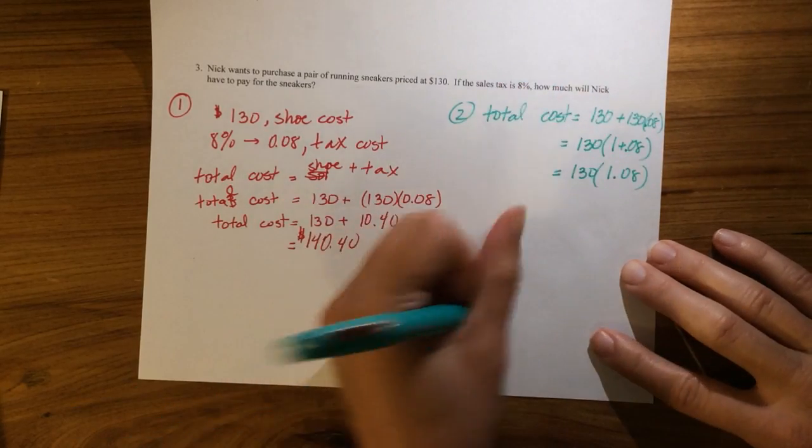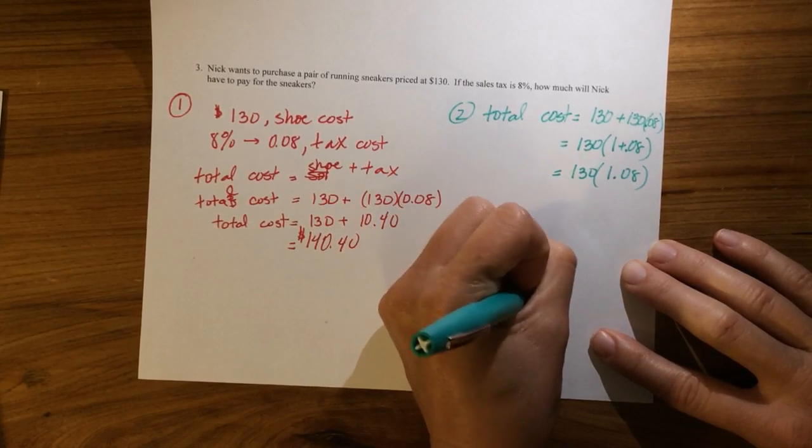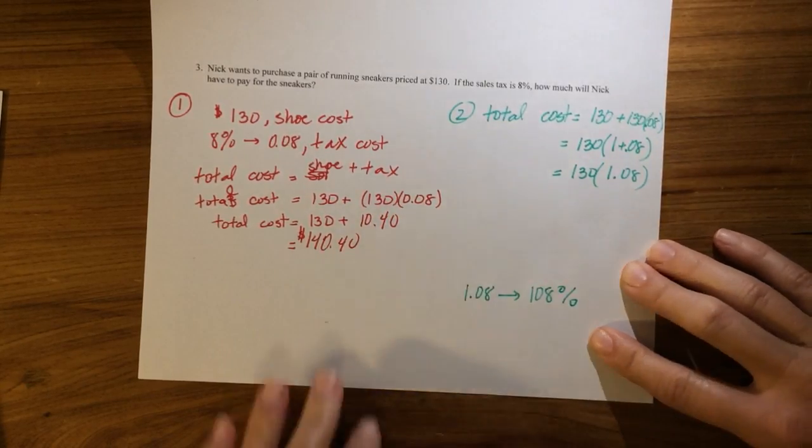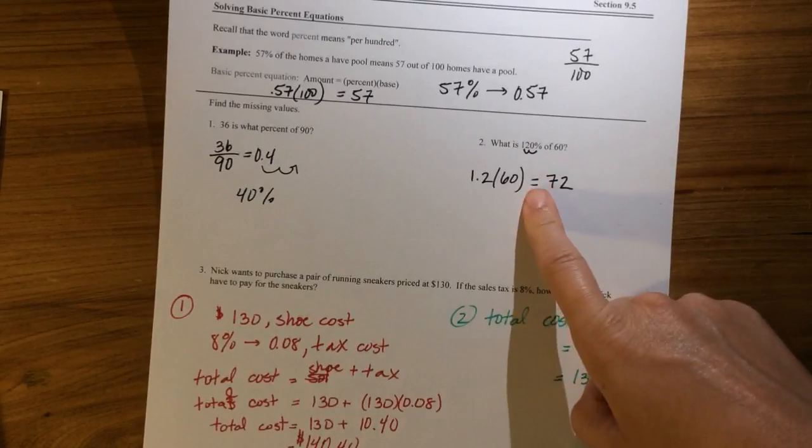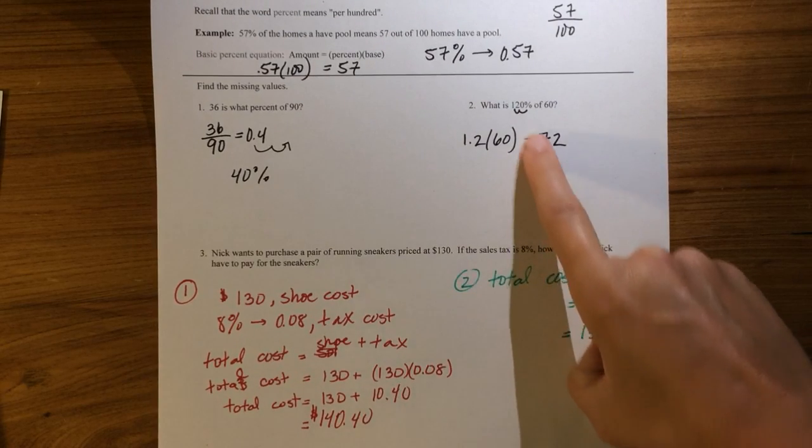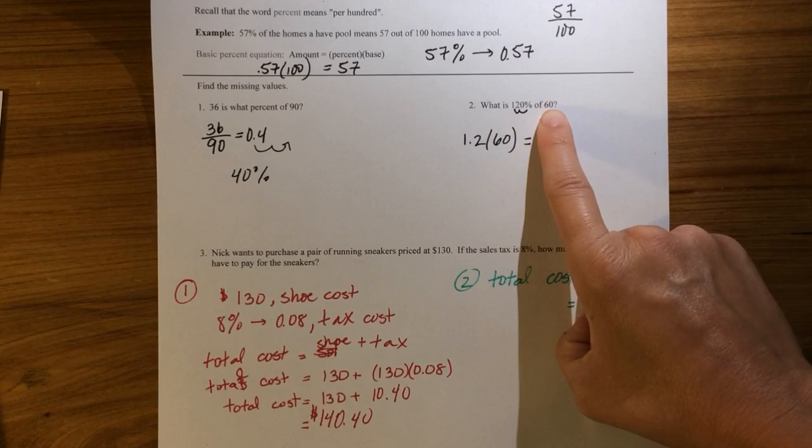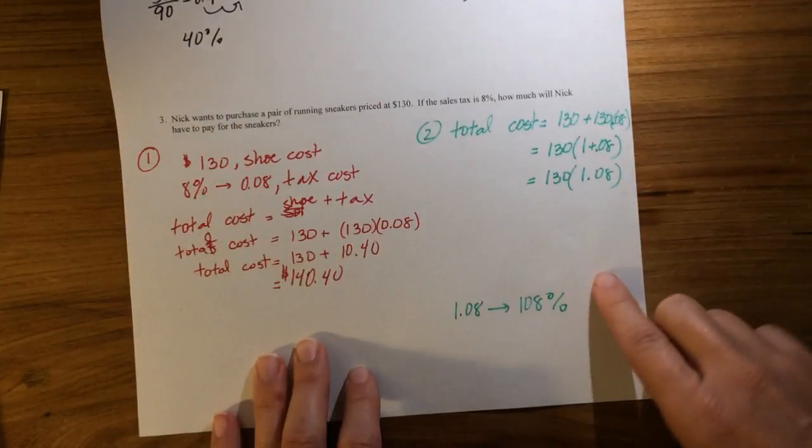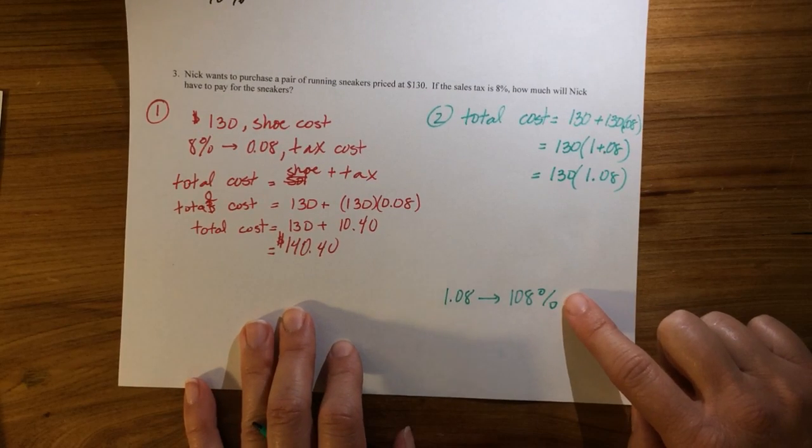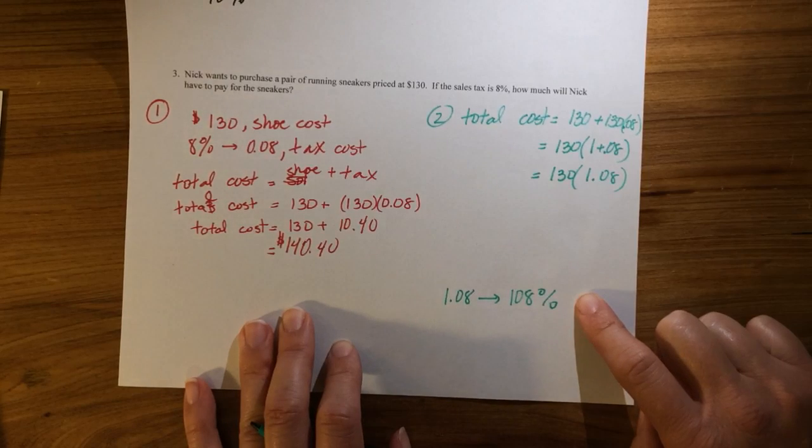Or, in terms of percents, remember that 1.08 as a percent is 108 percent. So going in line with our number two argument up here, remember that 120 percent of 60 means that you definitely have 60, but plus 20 percent more. So here, in two, what this says is that we're obviously paying the 130 for the shoes, but plus 8 percent more.